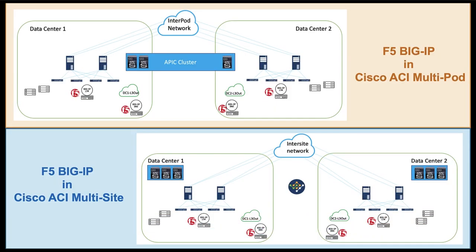Cisco ACI multi-site and multi-pod solutions can interconnect multiple Cisco ACI fabrics that can be geographically apart. In combining F5 Big IP DNS and LTM solutions, we can best utilize the network infrastructure to improve application performance and provide application resiliency across data centers.